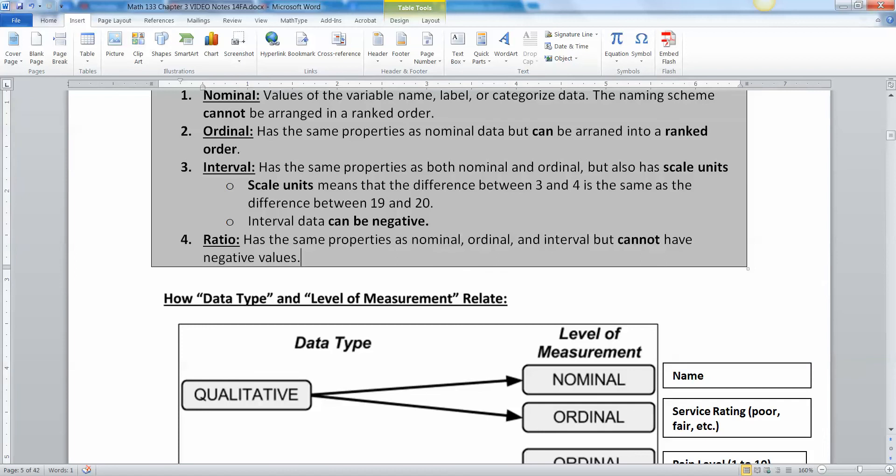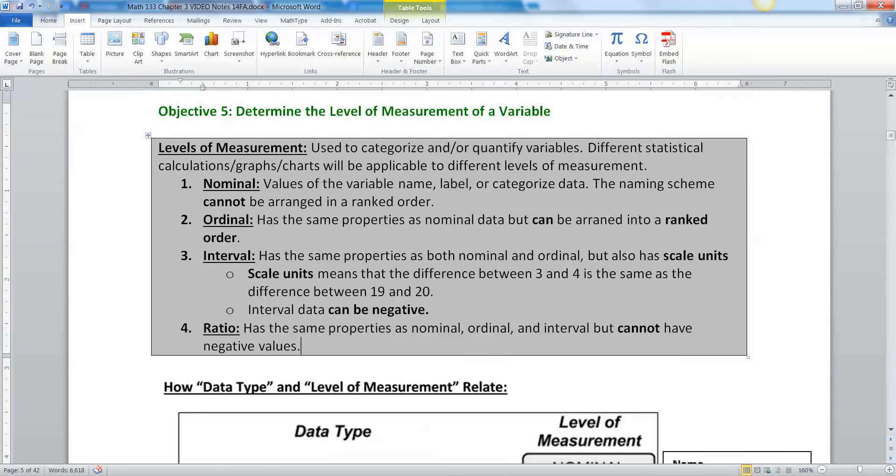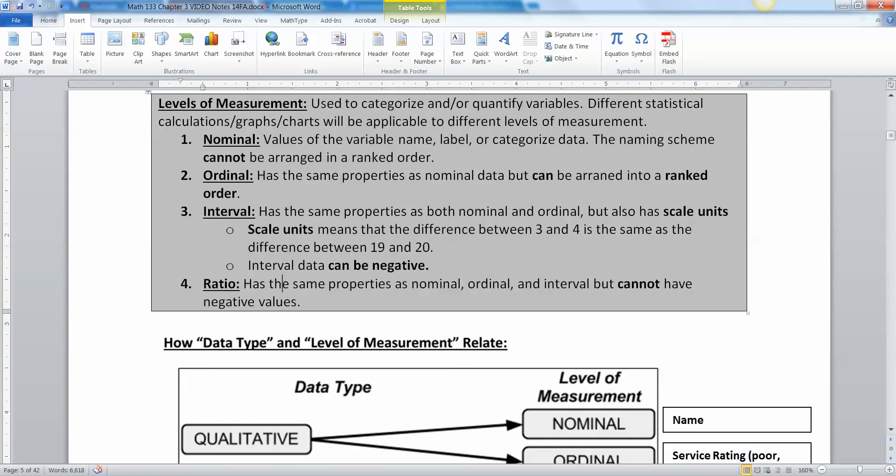Then what about ratio? Ratio is the best. So this goes from worst to best. The worst one's nominal, the next one's ordinal, the second best one is interval, and the very best one is ratio. It cannot have negative values. It has scale units, it can be ranked, all that good stuff, but it cannot be negative. That's the big difference between these two. Numbers that can be negative fall into interval. Numbers that cannot be negative are ratio.